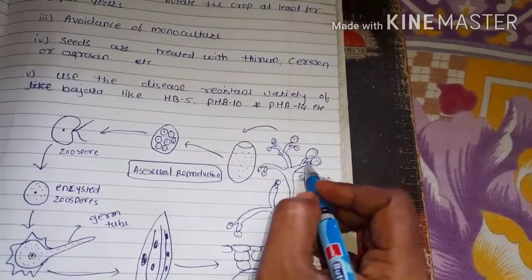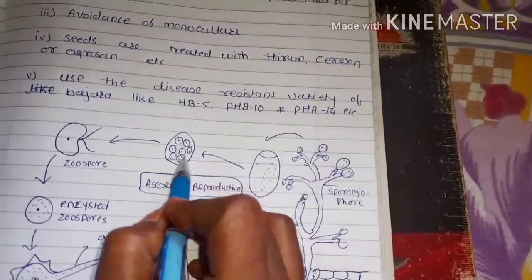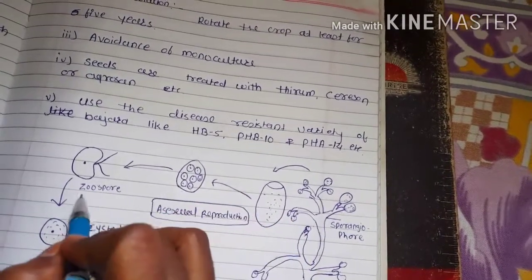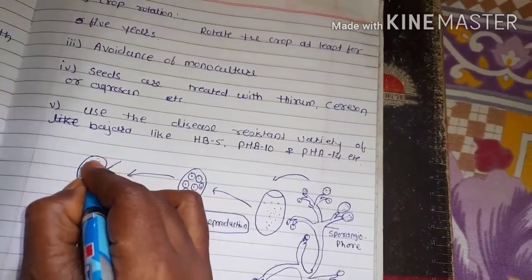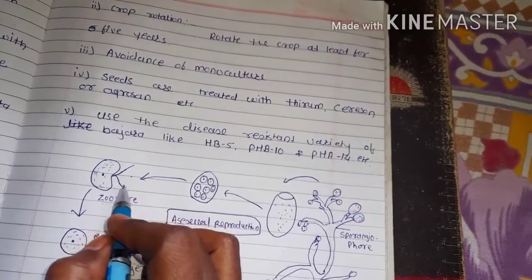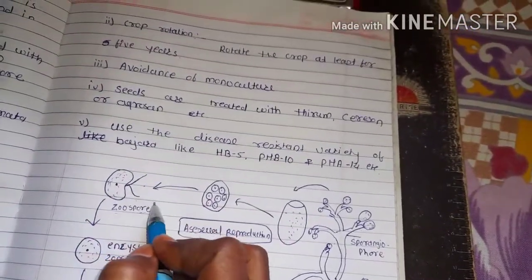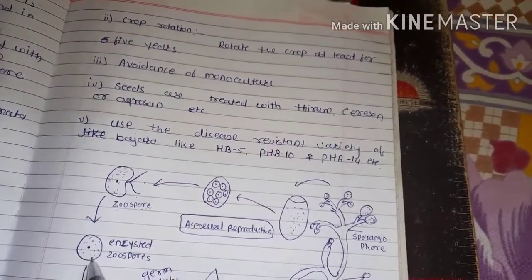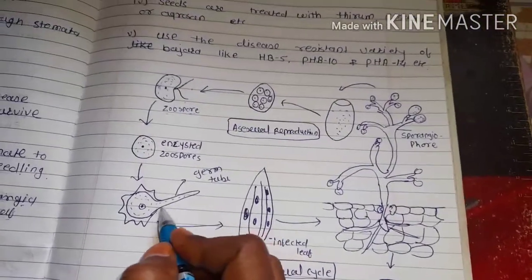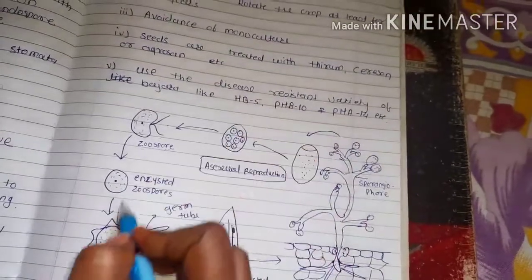The sporangiophore is present on the sterigmata. It develops into the oospore. After the oospore stage, it produces zoospores. The zoospore is kidney-shaped and biflagellate — the flagellation helps in movement and migration of the zoospore. After some time, the flagellation is lost. The zoospore then forms a germ tube for infection, which infects a new plant of Bajra, and this asexual cycle is repeated.